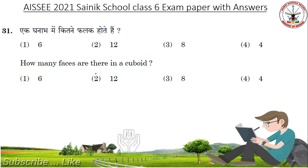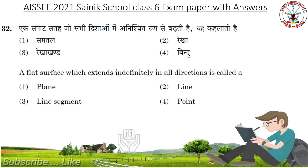How many faces are there in a cuboid? Answer is 6. A flat surface which extends indefinitely in all directions is called. Answer: Plane.